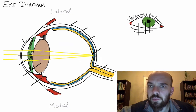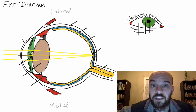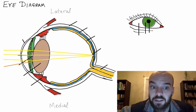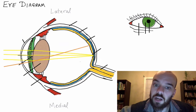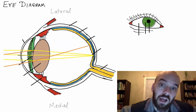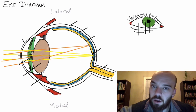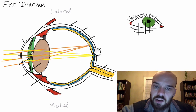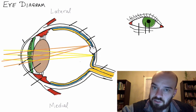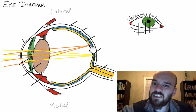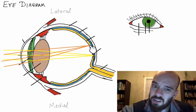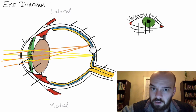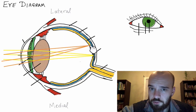Light that's coming in from the periphery — things that you're not looking directly at — is going to focus onto the retina as well, but just not right on the fovea. So our vision is not going to be quite as good there. We're not going to detect color as well, and we're not going to be able to see that image as well, but we'll still be able to see it in our peripheral vision.